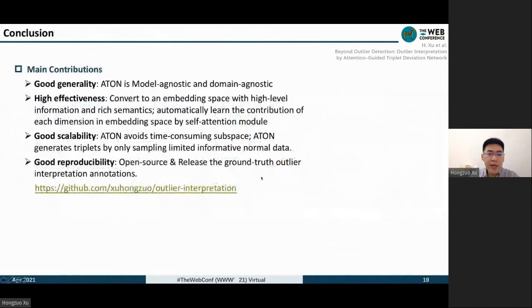In summary, we have the following main contributions. First, our method is model-agnostic and domain-agnostic for outlier interpretation. It can be used as an additional step to explain any outlier. Our method ATON has good effectiveness because it converts the original space to a new embedded space with expanded high-level information and rich semantics, and it can learn the contribution of each new dimension in embedding space by the self-attention module.